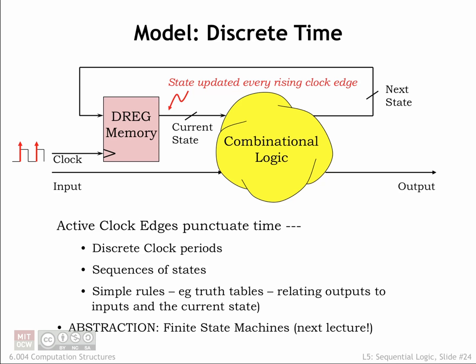Using a D-register as the memory component in our sequential logic system works great. At each rising edge of the clock, the register loads the new state, which then appears at the register's output as the current state for the rest of the clock period. The combinational logic uses the current state and the value of the inputs to calculate the next state and the values for the outputs.